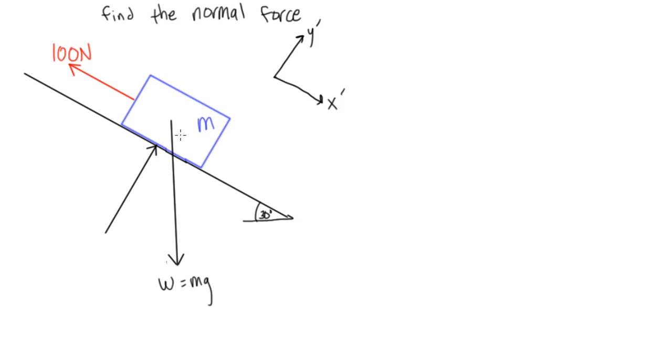Now when we go and look at this, the only vectors that we're going to have to break down, actually, is this weight. Because the normal force is already pointing in the y prime direction. This red force is pointing in the negative x prime direction. So the only one we have to resolve into components here is weight.